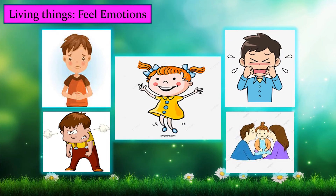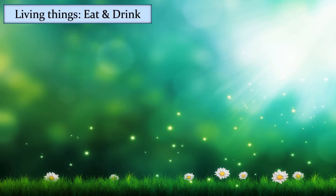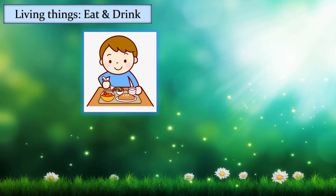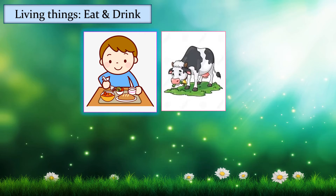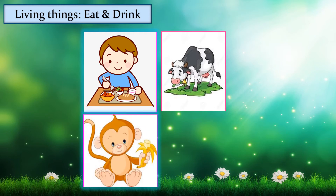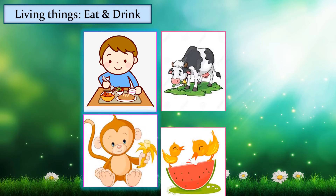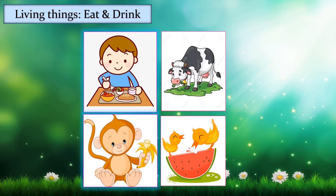Living things can feel emotions like sadness, anger, happiness, and crying, and we love each other. Living things can also eat and drink. For example, a boy eats food, a cow eats grass, a monkey eats banana, and birds eat fruits.